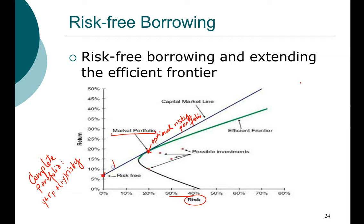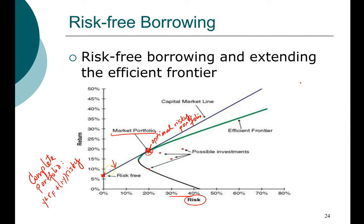An investor who wants less risk can choose maybe 30% in the risk-free portfolio and 70% in the market portfolio. A higher-risk investor can put 100% into the market portfolio and no money in the risk-free asset. A highly risky investor can invest beyond 100% in the market portfolio by borrowing at the risk-free rate — for example, borrowing a thousand dollars to purchase three thousand dollars worth of investment — choosing a risk level that is higher than the market portfolio.